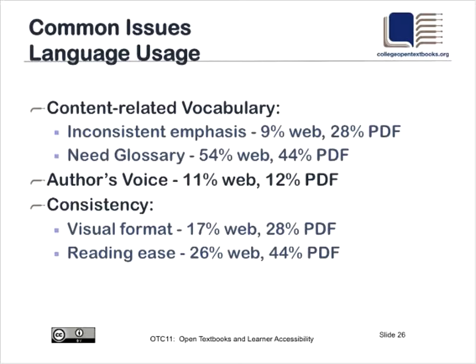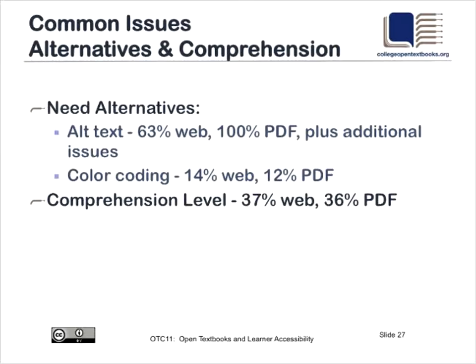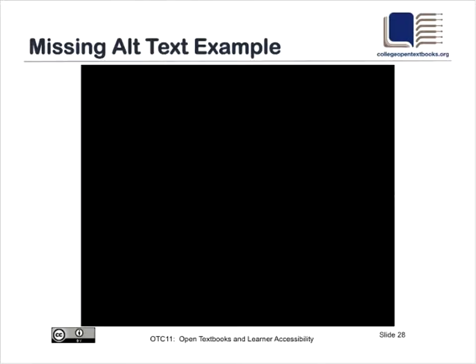Language usage is another common issue — content is developed using content-specific vocabulary, so having a glossary is extremely important, and consistency is also important here. We found that 63% of the websites and 100% of the PDFs did not have or had inadequate alt text. Color coding is a real problem — anybody who's color blind can explain why. And although you'd expect that comprehension level would gradually increase from the beginning to the end of a textbook as students learn content, we found a lot of problems with comprehension level varying wildly from chapter to chapter rather than gradually increasing.